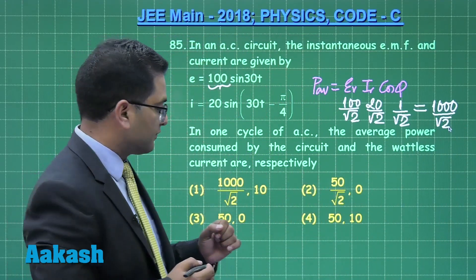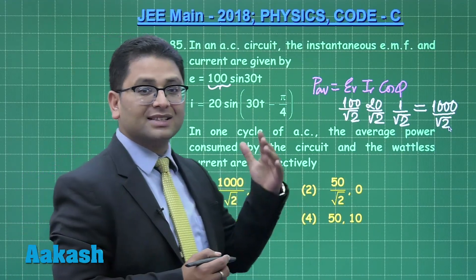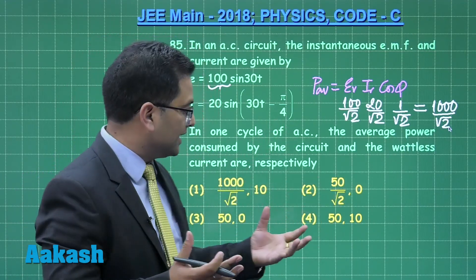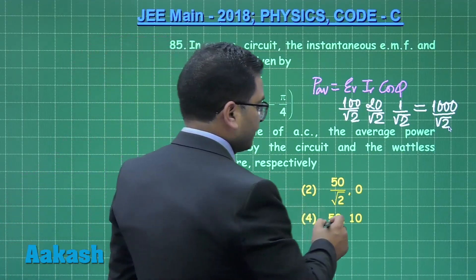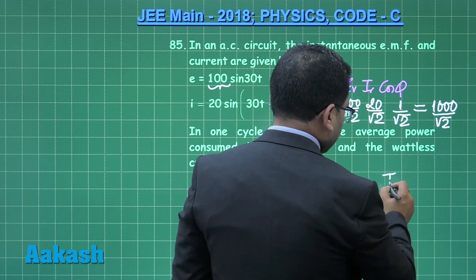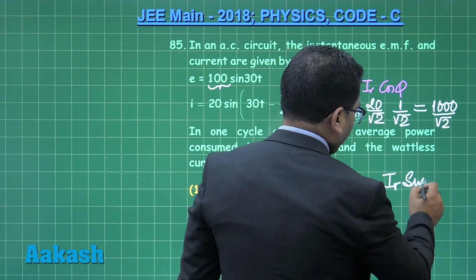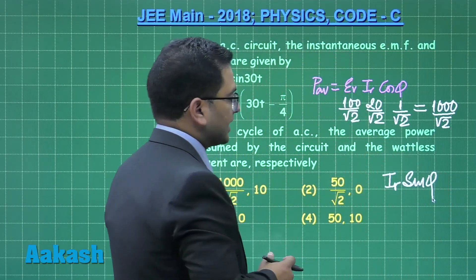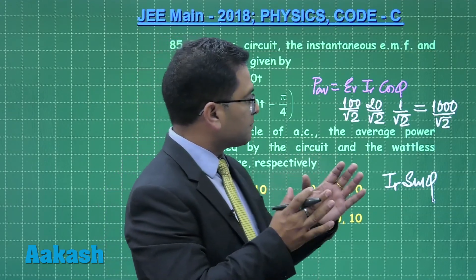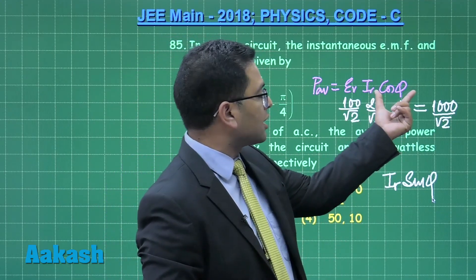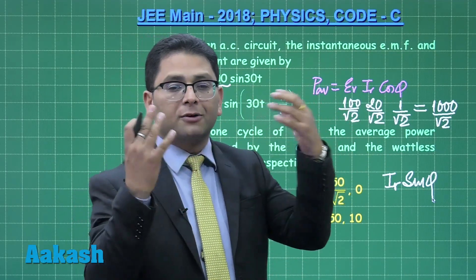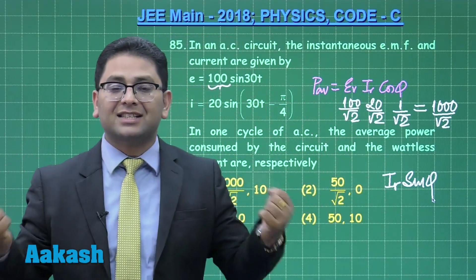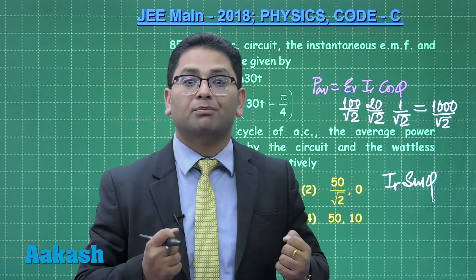So this ends up the solution, but still let us see the wattless current. The wattless current, first of all, only current means the I_RMS sine phi is called as the wattless current, because in the expression of current, the cos phi component comes in the power. So the sine phi component will not be participating in power. That is what we call as the wattless component of the current.